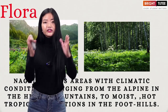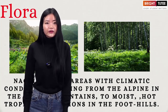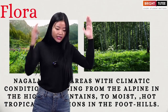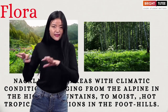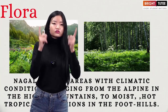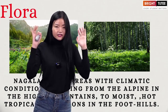Now let me explain in a systematic manner — first we'll learn about flora, then about the fauna of Nagaland. Nagaland has areas with climatic conditions ranging from the alpine in the higher mountains to moist hot tropical conditions in the foothills. Some areas are hilly, some are plains, which is why you will get to see both tropical and natural vegetation.